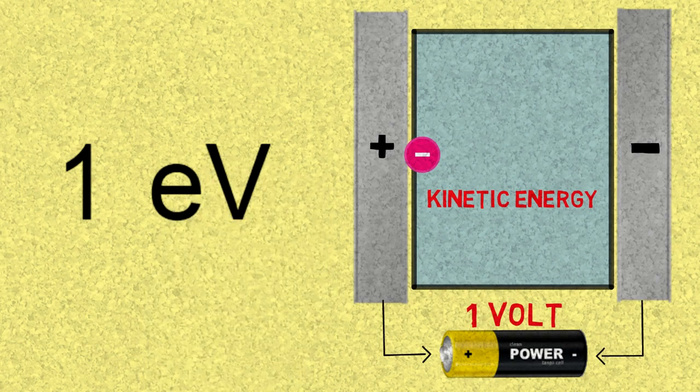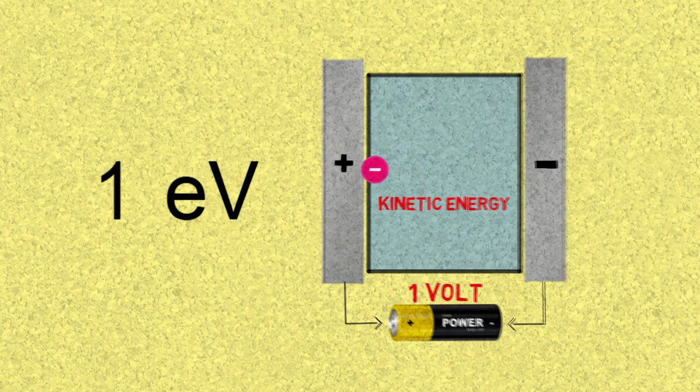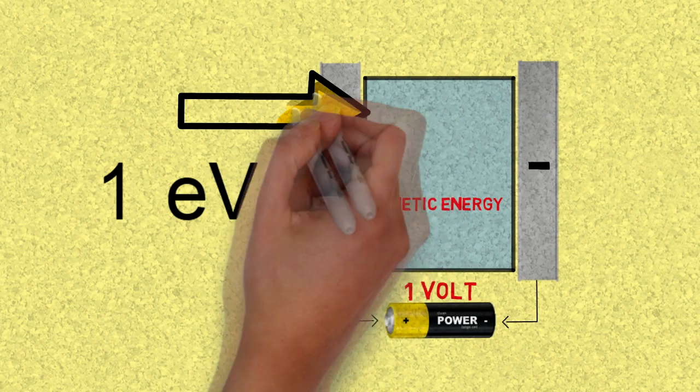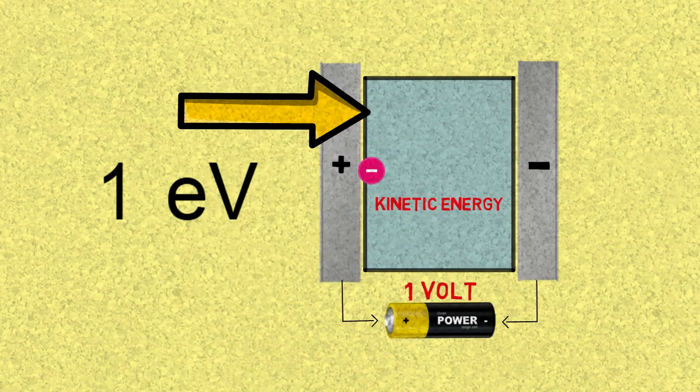Basically, it is the energy one single electron gains when it moves across a voltage difference of one volt in a vacuum, and that is why it's called an electron volt.